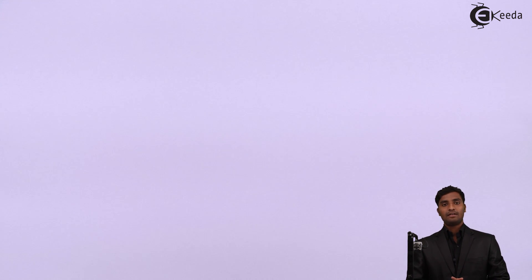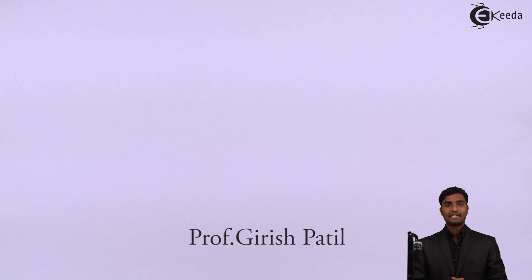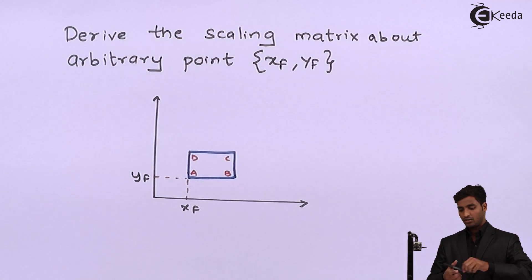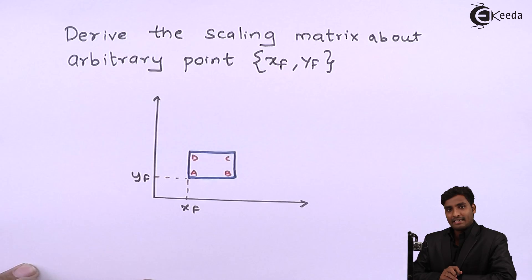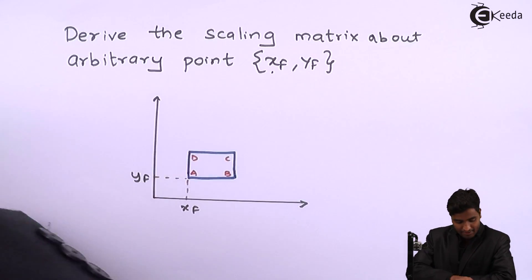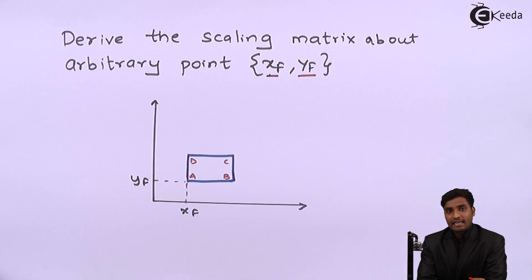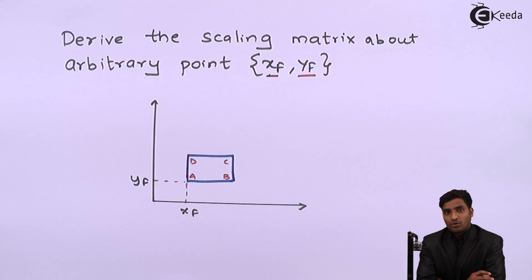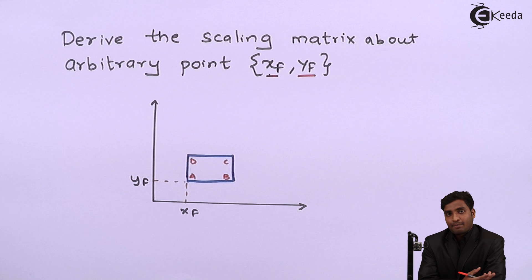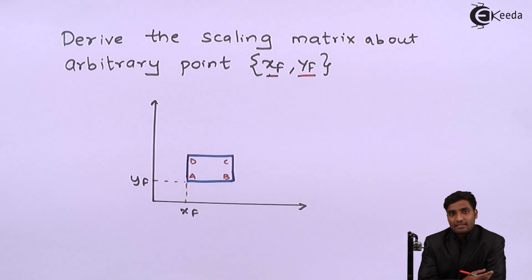Hello friends, today we will derive the formulae or matrices for scaling about an arbitrary point. We have to derive the scaling matrix about arbitrary point Xf and Yf. Earlier we were doing scaling with respect to origin, meaning the reference point was the origin. Now if the reference point, that is an arbitrary point, is given, we can use a direct matrix for solving that scaling matrix.